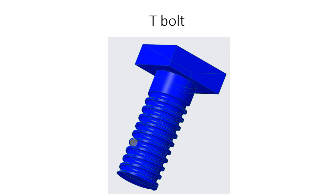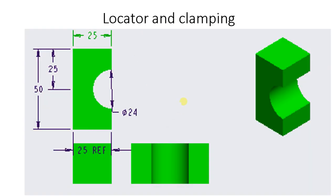T-bolts are used to fix this fixture plate with the milling machine table. T-bolts of M20, meaning metric thread of 20 mm diameter, are used to fix this fixture plate on the milling machine table. The locator plate is used to locate the component in the central or concentric portion of this locator. A component diameter of 24 mm will be located in this locator.